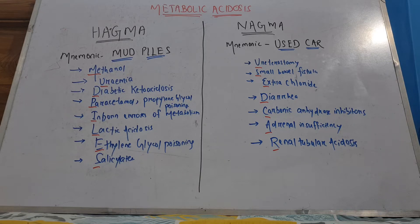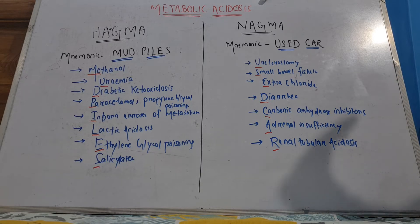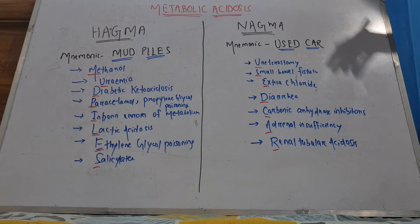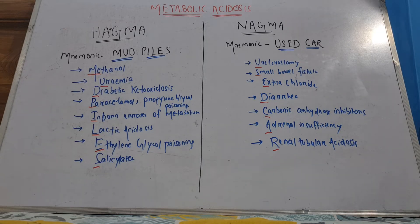So what is metabolic acidosis? Acidosis means pH less than 7.35, which is caused by the reduction of bicarbonate ions in our body. Due to bicarbonate loss, if acidosis occurs, that is metabolic acidosis. There are actually two types of metabolic acidosis known to us.